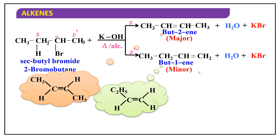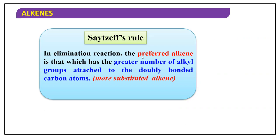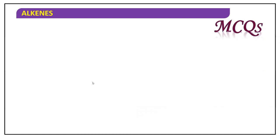To confirm: the major product is but-2-ene and the minor product is but-1-ene. In but-2-ene there are two CH3 groups attached to the carbon-carbon double bond, whereas in but-1-ene there is only one alkyl group attached. Saitsev's rule: in an elimination reaction, the preferred alkene is that which has the greater number of alkyl groups attached to the doubly bonded carbon atoms, or it is the more substituted alkene. Very, very important rule.